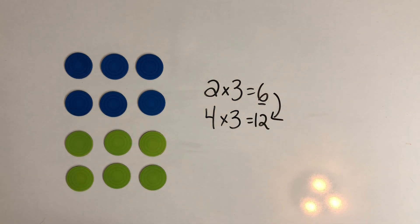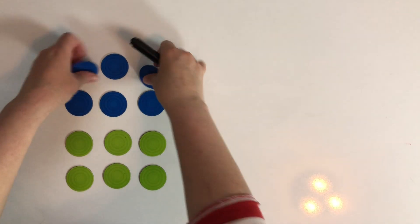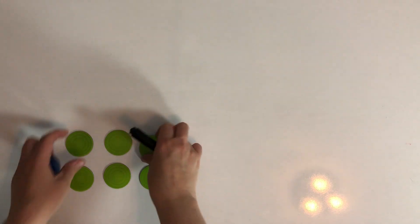So this is the strategy you can think of for multiplying by four. We can call it doubling the double.